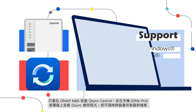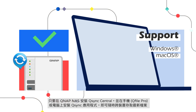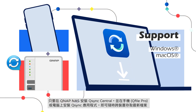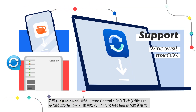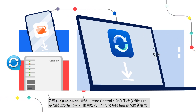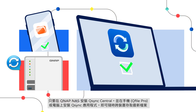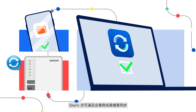Simply install Q-Sync Central on your QNAP NAS and the dedicated Q-Sync apps on your computers and mobile devices. After a quick configuration, you can easily access your files on NAS and sync the files between your NAS and connected devices.